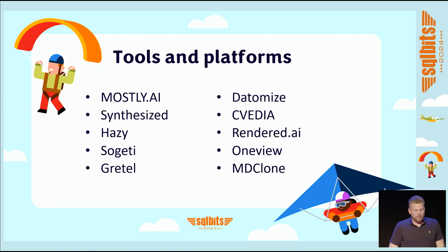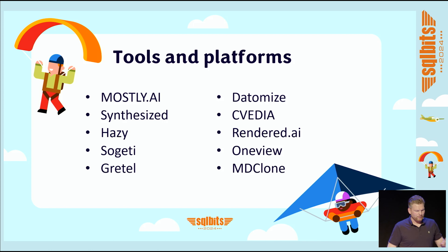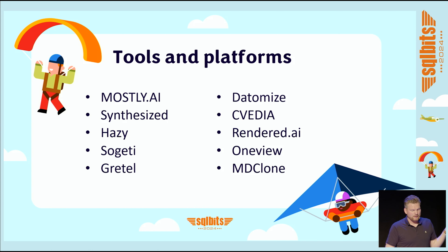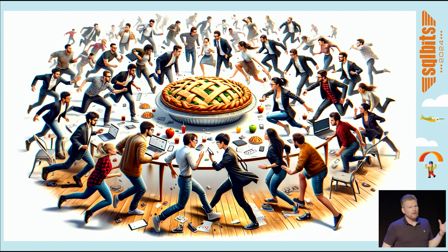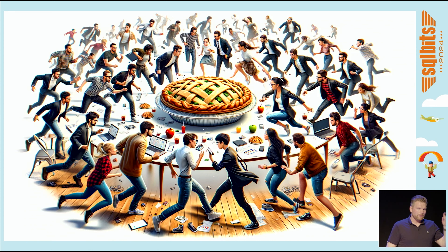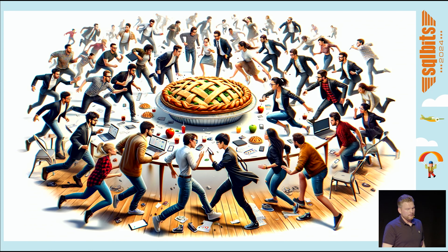There are a couple of tools and platforms out there: Mostly AI, Synthesized, Hazy, and Gretel — and I probably forgot some major ones. This space looks like a lot of startups and AI vendors all wanting a piece of the pie, understandably, because the market is really transforming. If you're going to adopt synthetic data generation, don't do a vendor lock-in by putting all of your money on one company. It might be best to stay flexible because things will change rapidly.